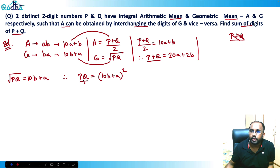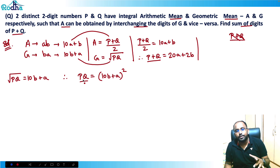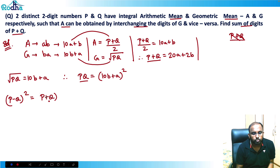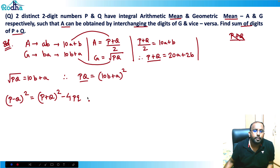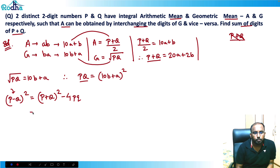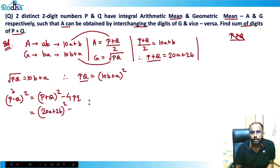Now we have expressions for p plus q and pq. We can form an identity in terms of these: (p minus q) squared equals (p plus q) squared minus 4pq. We'll try to find p minus q because it gives us a constraint on p and q. Let's solve: p plus q was 20a plus 2b, so (p plus q) squared equals (20a plus 2b) squared, and pq equals (10b plus a) squared.